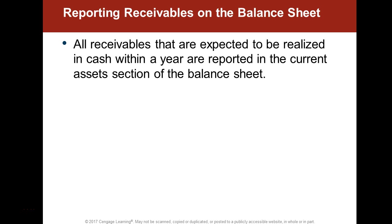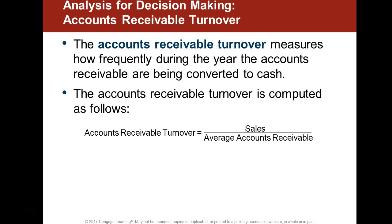Receivables are generally realizable in cash, though not always — sometimes they are realized in another type of asset. Cash is generally first on the list, but you can pay back a receivable in furniture or equipment depending on your agreement. The expectation is that assets will be received, and most likely that asset will be cash.